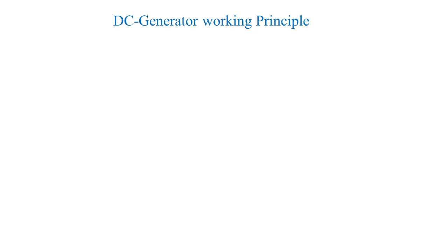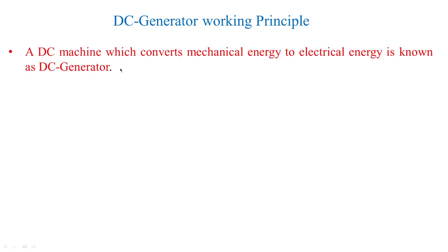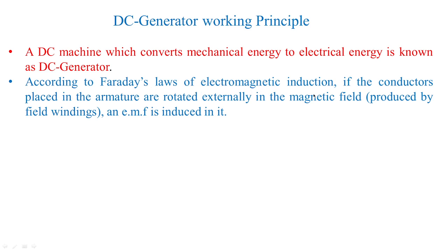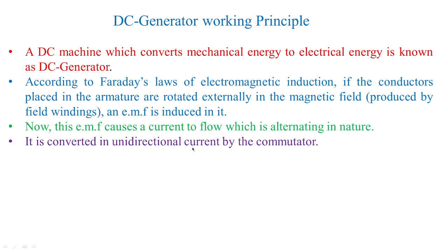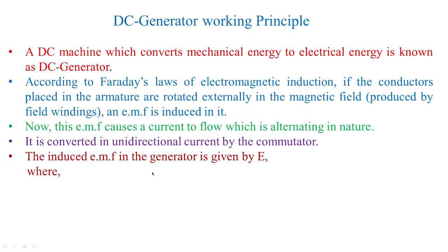The working principle of a DC generator: it becomes a DC generator when it converts mechanical energy to electrical energy. According to Faraday's law of electromagnetic induction, if the conductors placed in the armature are rotated externally in the magnetic field produced by the field windings, an EMF is induced. This EMF causes a current to flow which is alternating in nature, and it is converted into unidirectional current by the commutator. The induced EMF is given by E = φPZ / 16A.